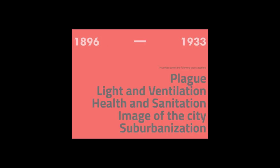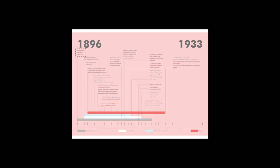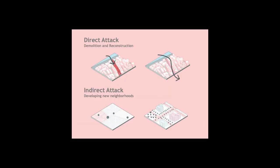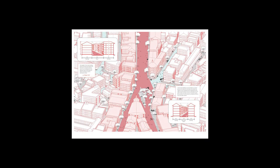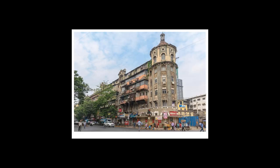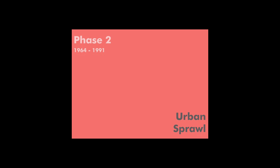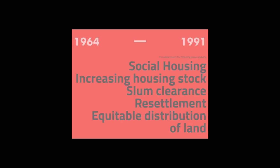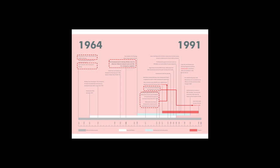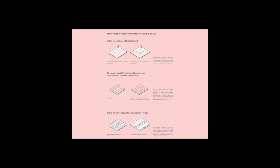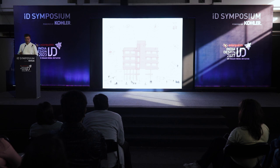We went back into the history of Mumbai to look at the origin of the first building codes, which came about when the plague started — the Bombay Improvement Trust began demolishing existing fabric and building new housing through town planning mechanisms. Princess Street was a fabric demolished because it was too congested. As time progressed, when the first development plan came about in 1964, social housing became a big thing, FSI was introduced, and slum clearance became important.